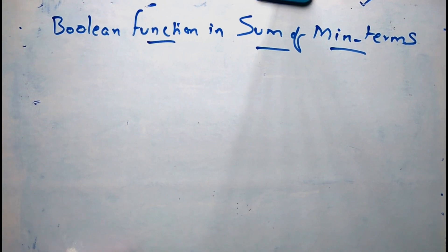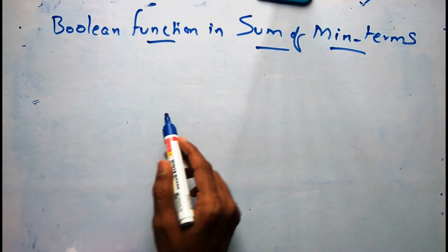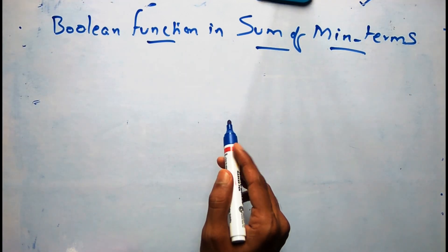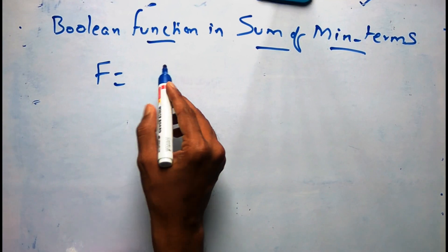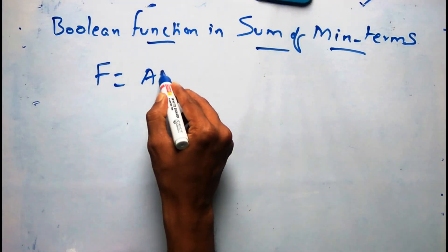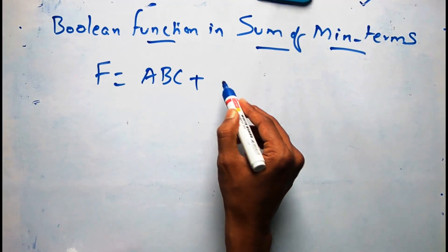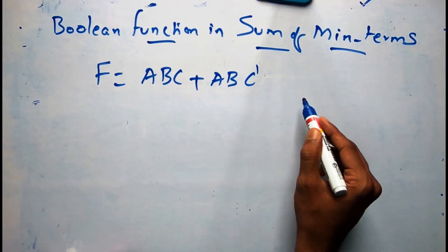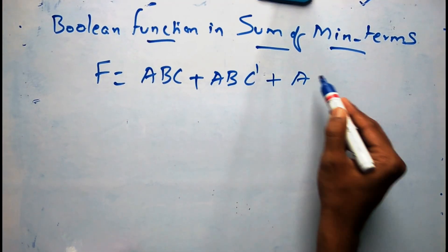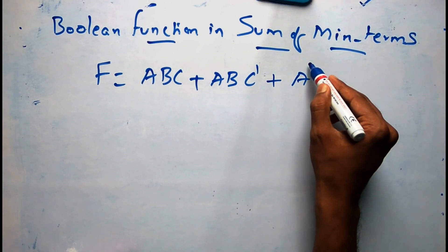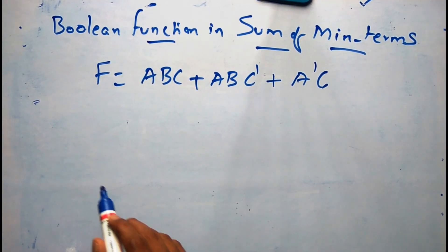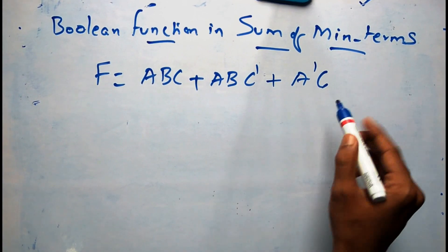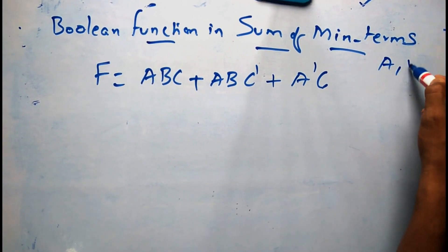Welcome to the course on computer organization. Today's lecture is on how to represent a boolean function in sum of min terms. In the previous lecture, we have taken a boolean function f equal to abc plus abc' plus a'c. This function is composed of three variables a, b, c.